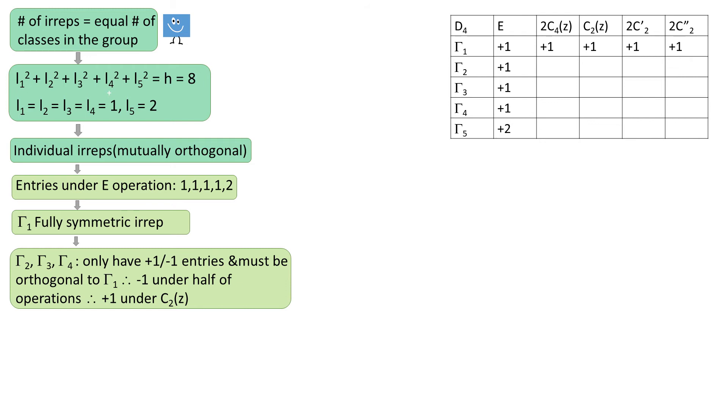Please notice that I don't say minus 1 under 4 classes, I said minus 1 under 4 operations. We know that they all have plus 1 under E operation, so the only way to get an even number of positive entries is to put plus 1 under C2Z.